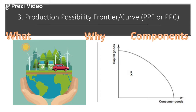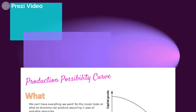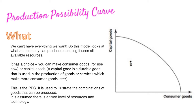This model will be in your exam and it shows us economic growth, so it's really important to understand how to use it and the different changes that happen. You'll most likely be asked to show a change — whether that is moving the curve or moving the X somewhere on the curve. It's used to illustrate combinations of two goods that can be produced in the economy, assuming it uses all of its available resources.